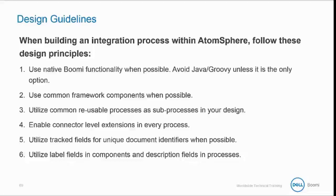Enable connector-level extensions in every process. Utilize tracked fields for unique document identifiers when possible. Finally, utilize label fields in components and description fields in processes.